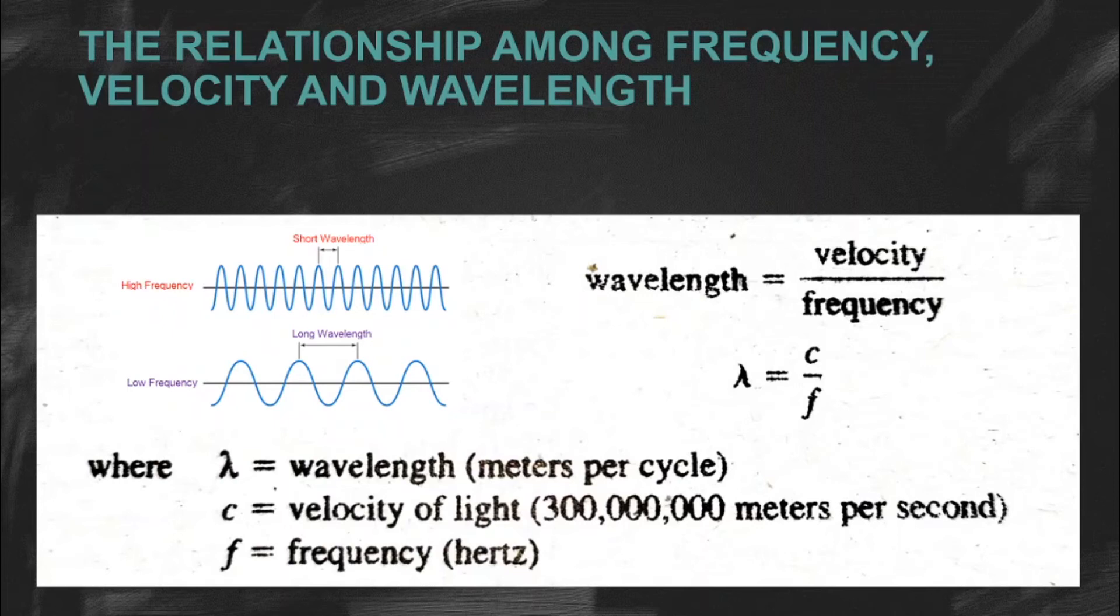Anong kinalaman ng frequency at ng wavelength sa isa't isa? The wavelength and frequency of light are closely related. The higher the frequency, the shorter the wavelength. Kung makikita niya naman sa picture na nandito, kapag mas mataas yung frequency, mas maikli yung wavelength nila. At kapag mas mahaba naman yung wavelength nila, mas low naman yung frequency. Because all light moves through a vacuum at the same speed, the number of wave crests passing by a given point in one second depends on the wavelength.